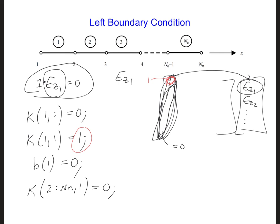Go ahead and initialize the b array in your code, if you haven't already, and also program the left boundary condition. Make sure you comment it so we know what that part of the code is doing.